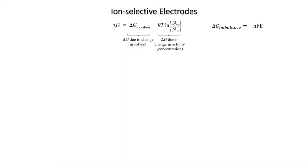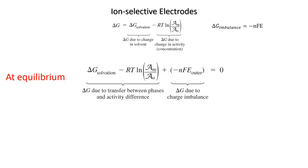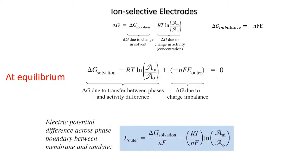ΔG for the transfer of potassium to the membrane from solution is the difference of the change in solvation energy and the change in free energy due to the change in activity. ΔG due to the change in activity is in turn proportional to the natural log of the ratio of bound and free potassium. ΔG due to the charge imbalance is proportional to the product of the potential difference caused by the charge imbalance and the number of charges passed. At equilibrium, there is no net change in free energy, so the sum of all three ΔG's is zero. By rearranging this equation, we can get E_outer, the electric potential difference across the phase boundary, and relate it to the concentration of bound and unbound potassium and ΔG_solvation.